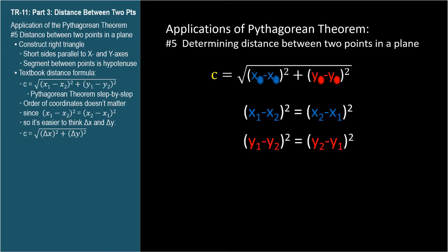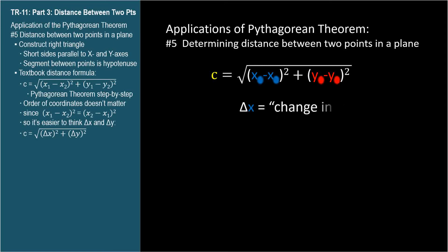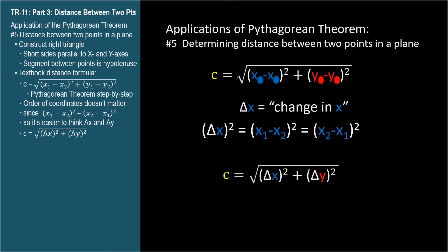So let's introduce the term delta x. Delta is the triangle-looking Greek letter, and in math it's often used to denote 'change in.' So delta x means change in x, and delta x squared equals the x difference squared. Here's the distance formula without any subscripts to remember — this might be easier if you know what delta means.